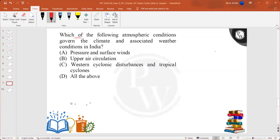Which of the following atmospheric conditions govern the climate and associated weather conditions in India? What is the first thing we see in India regarding climate? The air flow and pressure - India's climate is made of different formations related to air flow and pressure.